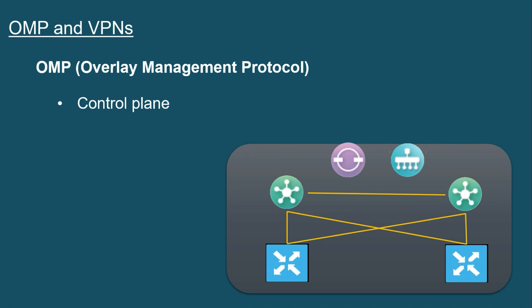OMP is going to be propagating things like the prefixes that are at the different WAN sites, the next hops, the crypto keys, and the policy information that we're pushing down. OMP really is a critical protocol to convey all of that important control plane intelligence that we need.